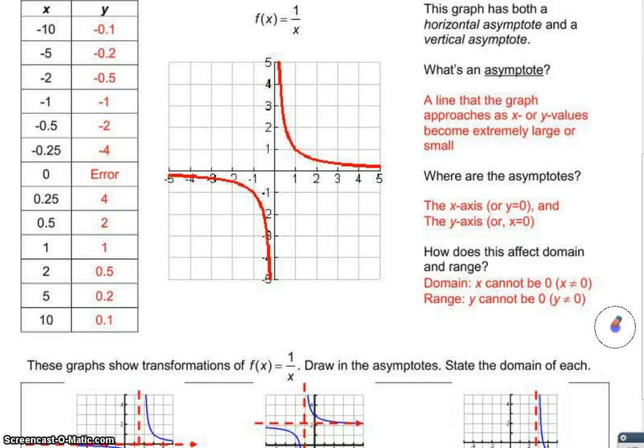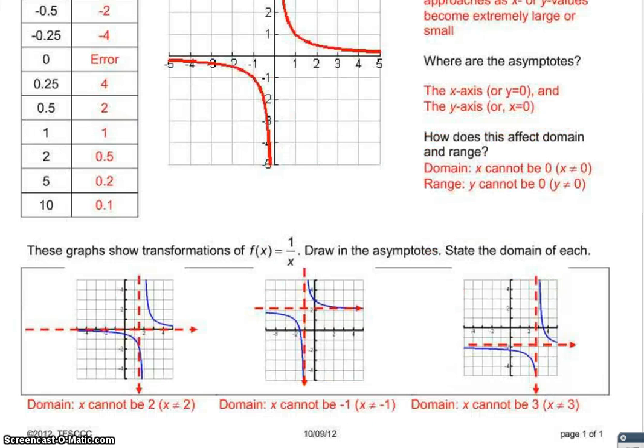Let's look at the bottom of the page. These graphs show transformations of f(x) = 1/x. We're going to draw the asymptotes and state the domain of each. Looking at my graph, we're looking at where it's going to approach.